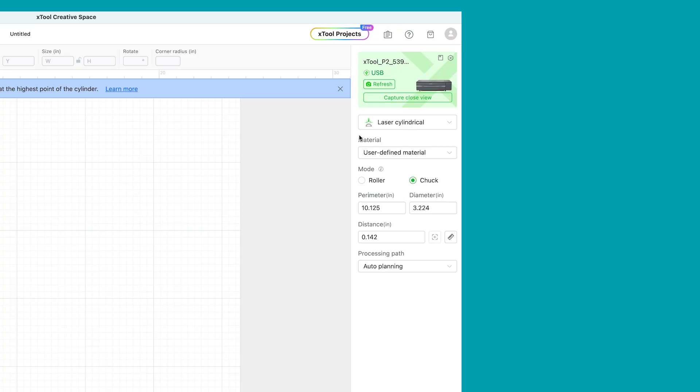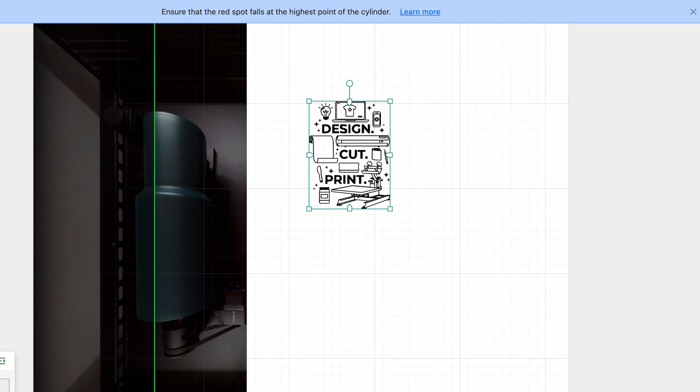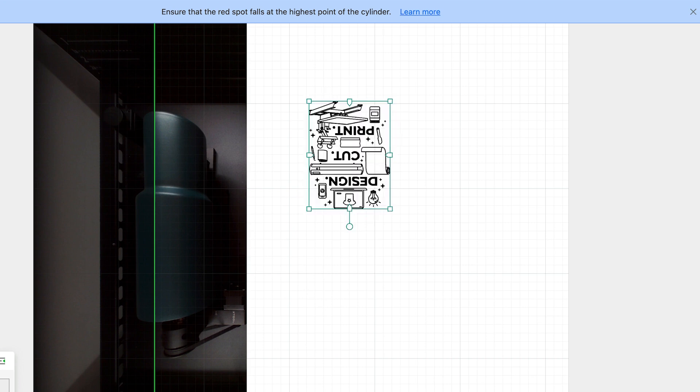In creative space, we first need to adjust our material settings. You want laser cylindrical selected and the mode is chuck. Then for the simple modern tumbler, the top perimeter measures 11.787 inches around. When you put in the perimeter, the diameter is going to auto adjust. You don't need to change this. Next, click the auto measure icon and the machine will determine this number. I leave the processing path to auto and we're ready to import our design. Make sure that it's the size to the same measurement we used earlier, which is 3 and 3 quarter inches wide.